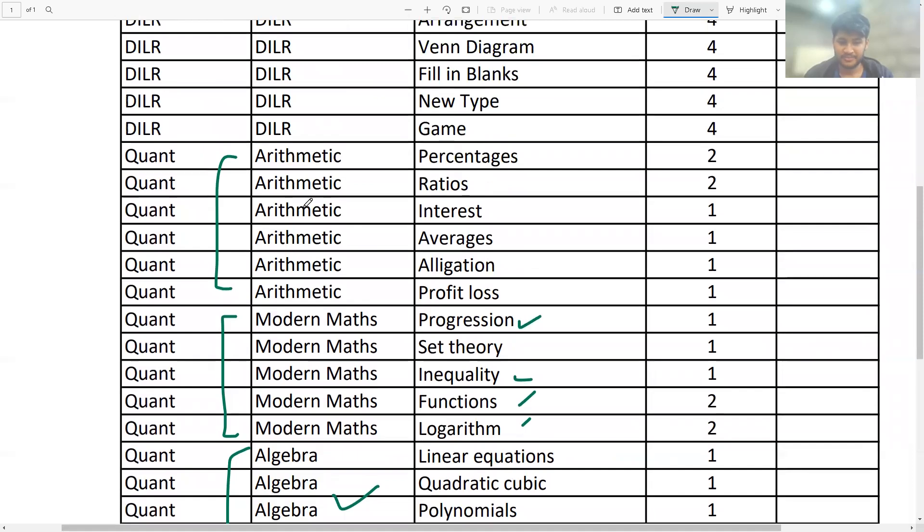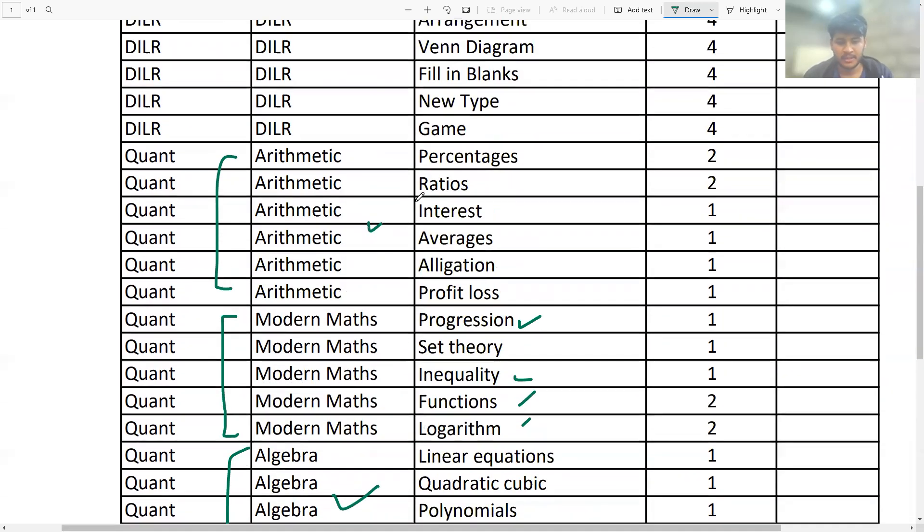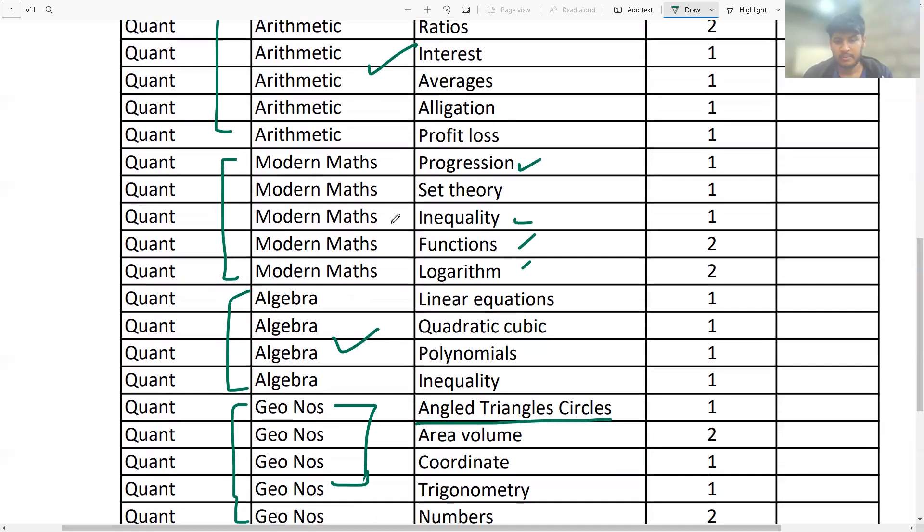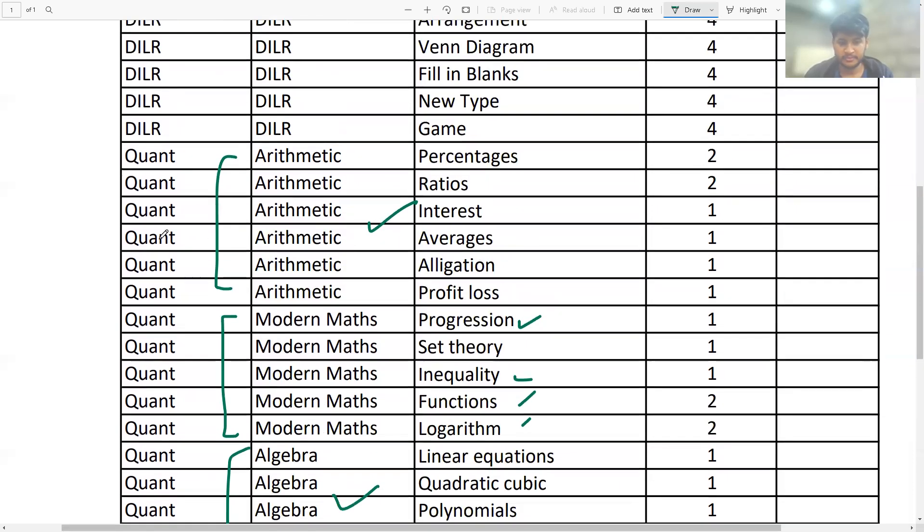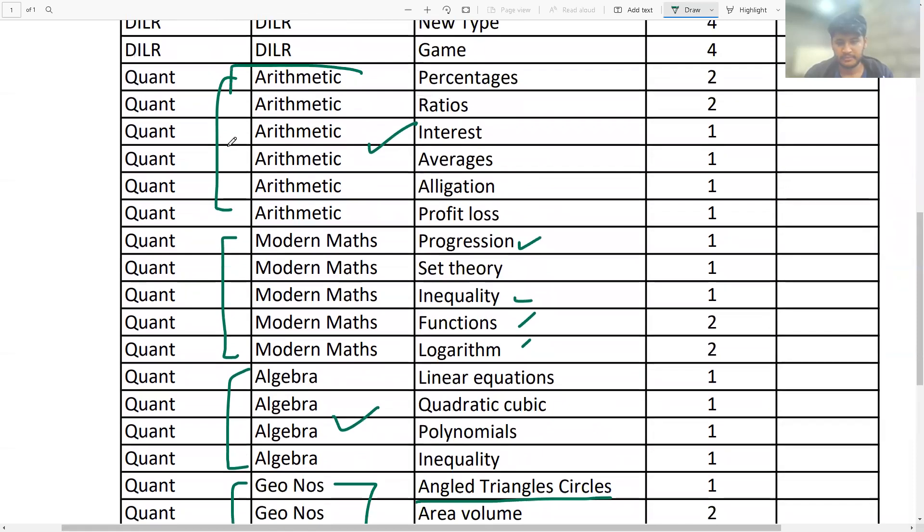And then with arithmetic or modern maths, any topic you have left? So I think arithmetic, I am pretty comfortable with. Modern maths is something that I might say I'm not very sure of. See, without arithmetic, you can't survive. It's impossible to survive CAT or any exam, any entrance exam which contains maths. You cannot survive if you can't do arithmetic. You can clear CAT cutoff only if you do arithmetic.